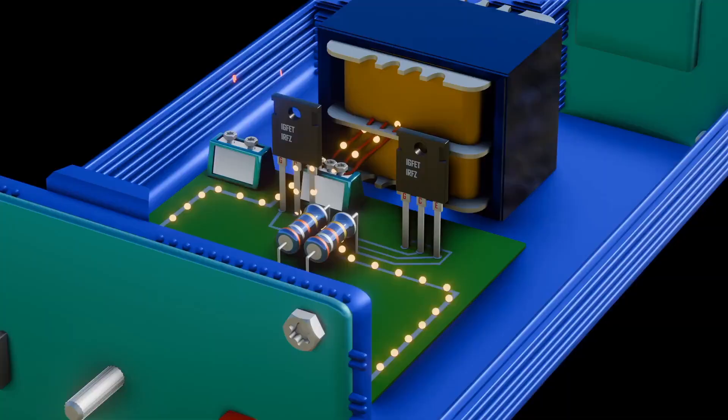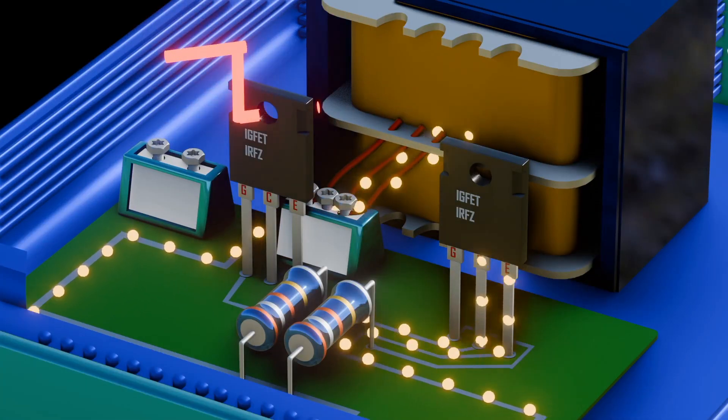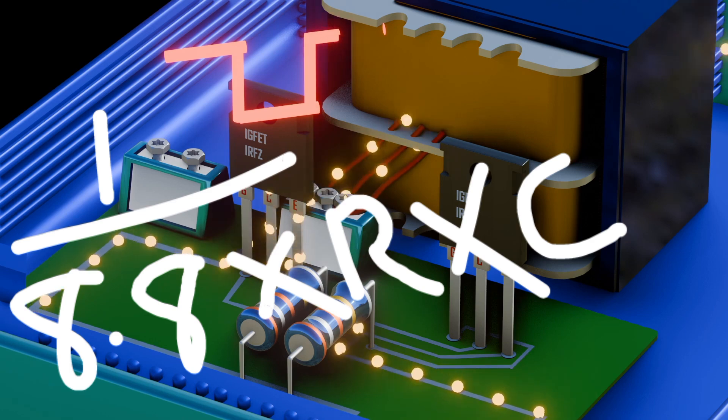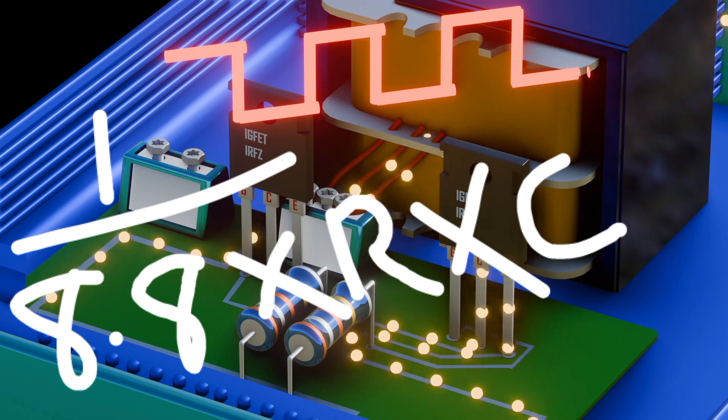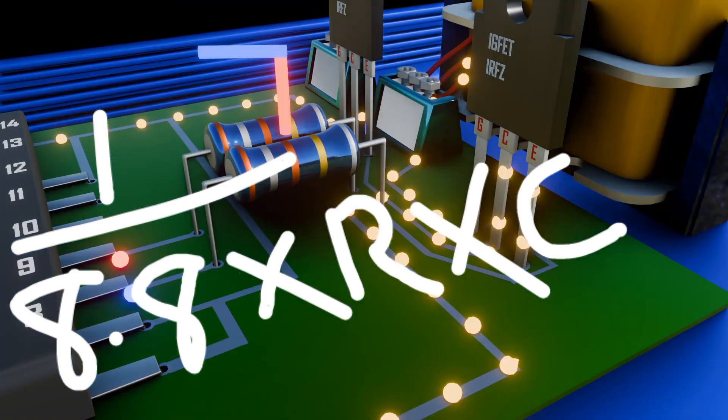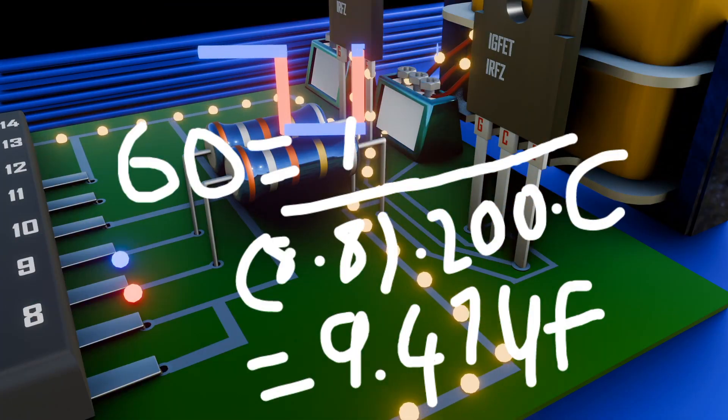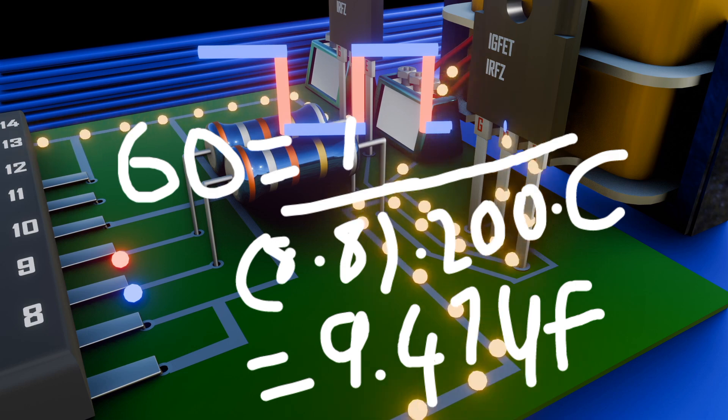And the formula to determine the frequency of pin 10 and 11 is F equals 1 over 8.8 times R times C. For example, I want the frequency to be 60 Hz and I have a 200 ohm resistor. Using the formula, the required capacitor will be 9.47 microfarads.